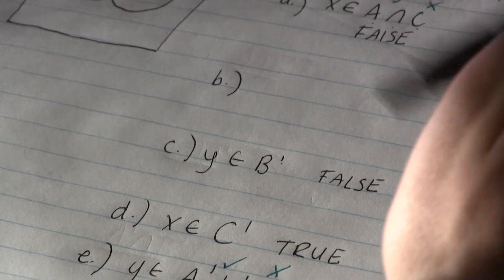Y doesn't live in C. So Y satisfies one of the conditions. It doesn't satisfy both, but that's okay because it's union. And union means you have to satisfy at least one of them. This is a true statement. That's true.